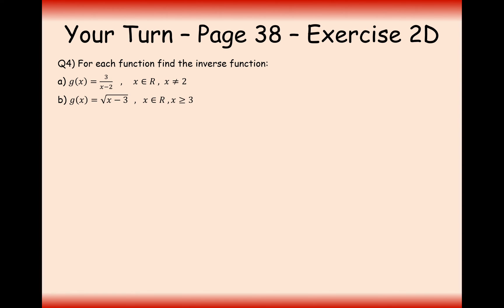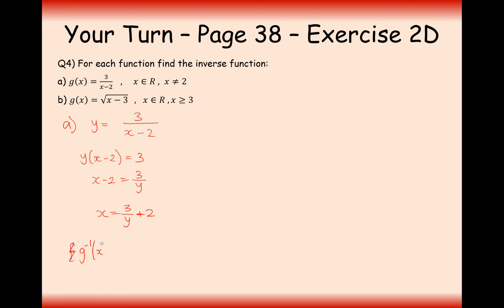Now your turn to have a go at finding some inverse functions — there are plenty more questions in exercise 2D as well. For part A, we find the inverse by setting y equals 3 over x minus 2, multiplying x minus 2 onto the other side, dividing by y, then adding 2. We get x equals 3 over y plus 2, so g inverse of x equals 3 over x plus 2. Alternatively, if you expand the brackets, another correct answer is 2x plus 3 all over x.